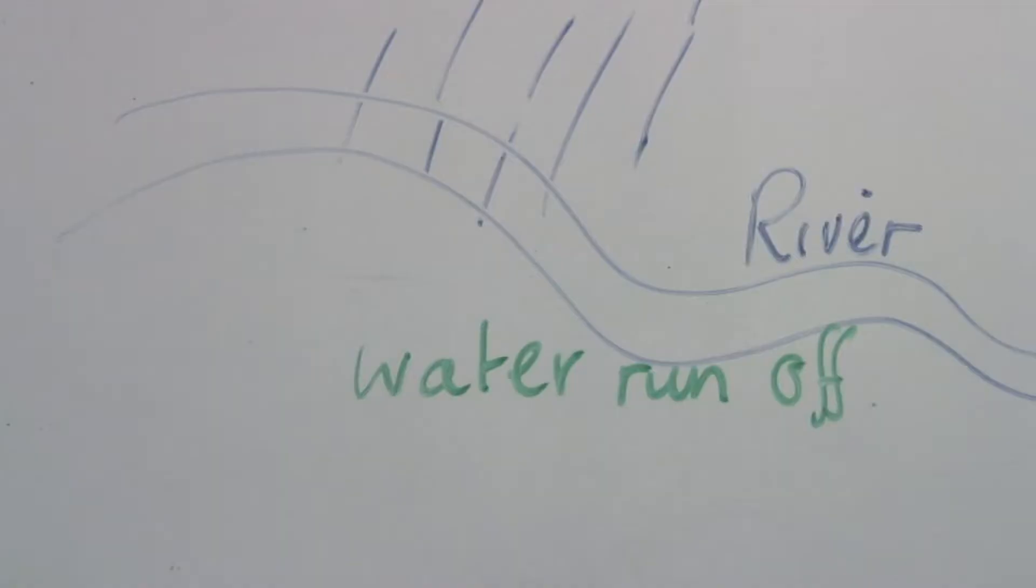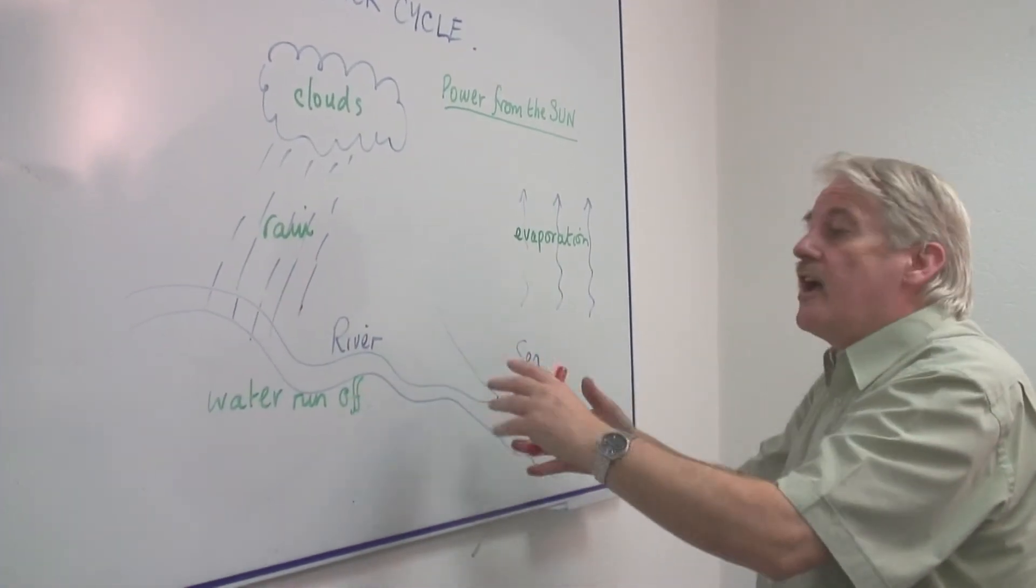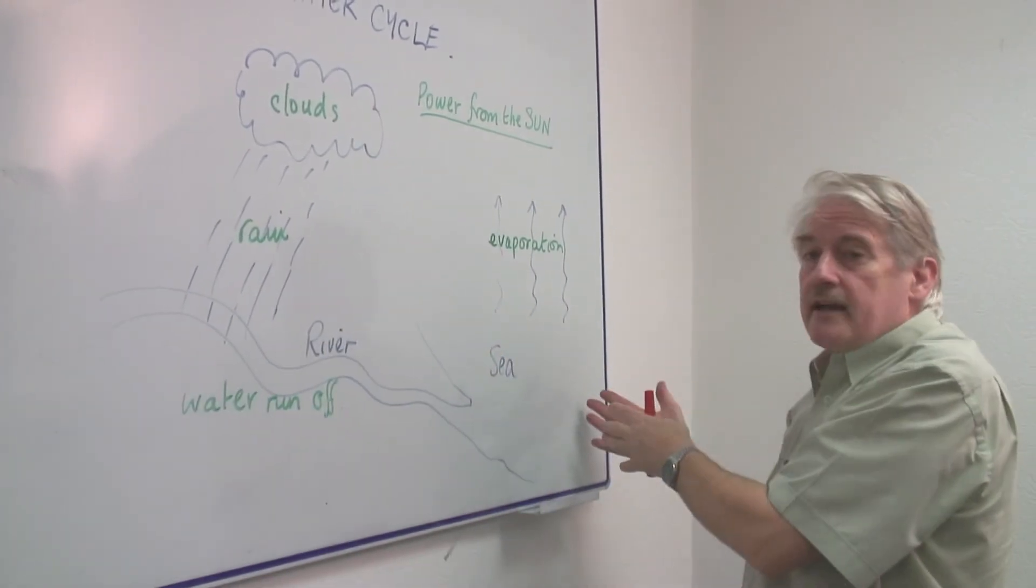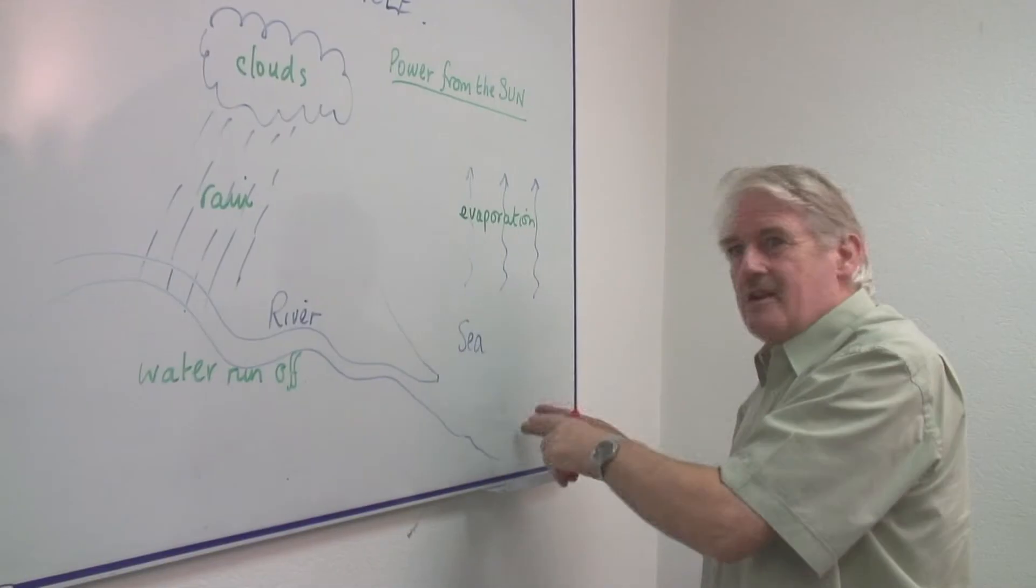The land then, through water runoff, creates streams and then larger rivers. And the water goes back to the sea. So really, water does run uphill.